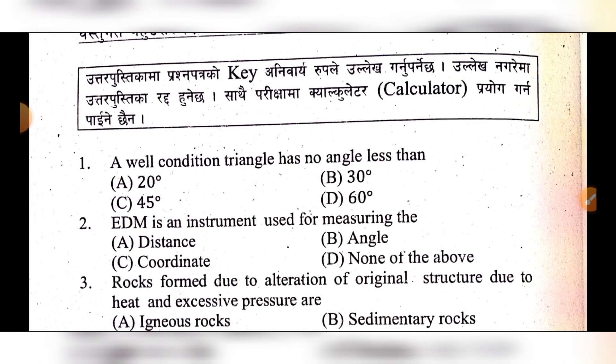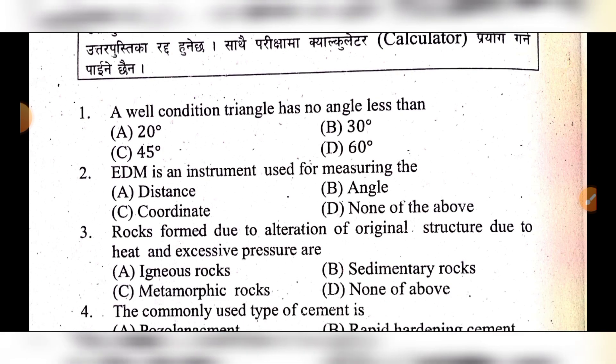Question 2: An idiom — an instrument used for measuring — option A: distance, option B: angle, option C: coordinates, option D: none of the above. The answer is option E: distance.